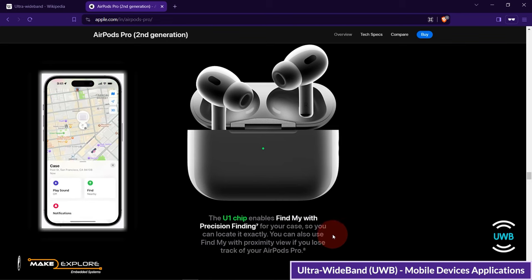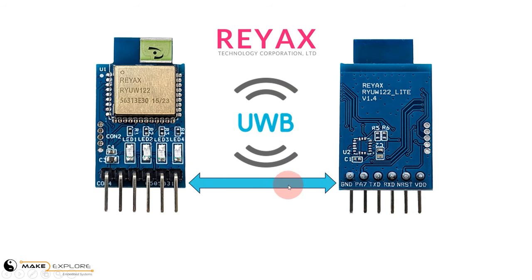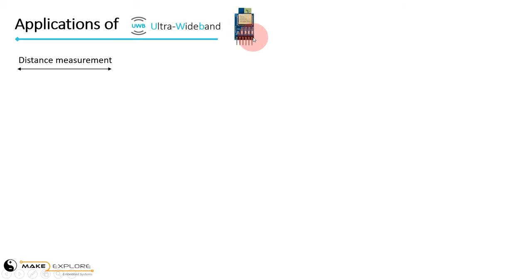This feature lets you find your AirPods with pinpoint accuracy — very fascinating. Now we are going to see the hardware module — the ultra-wideband transceiver module RYUW-122, manufactured by a company named REACTS. At the end of this video tutorial, we will use this hardware to build a project demonstrating distance measurement using ultra-wideband radio technology. We are going to make a distance measurement application using this UWB transceiver module, but before that, let's see a brief theory about how ultra-wideband is used for distance measurement and real-time location finding.